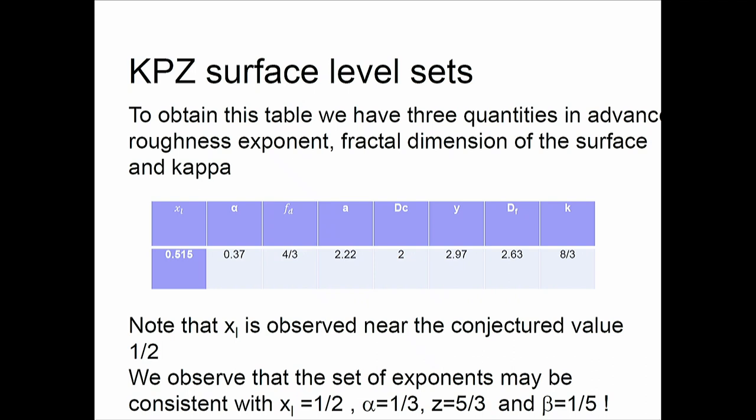The claim is that the KPZ surface level sets have these parameters: fractal dimension four-thirds, kappa = 8/3, and XL = 0.5 — just like the Gaussian free field. This is important because there is a conjecture that XL is a super-universal exponent — an unproven conjecture. A super-universal exponent is one that doesn't change from one universality class to another.